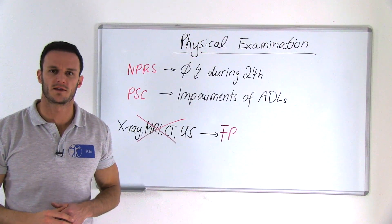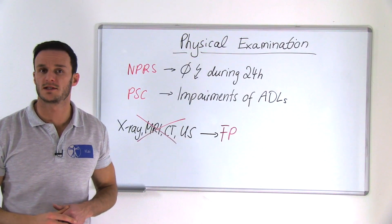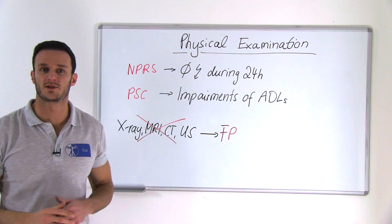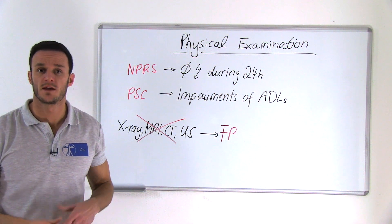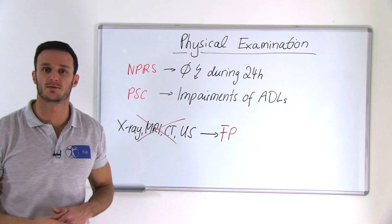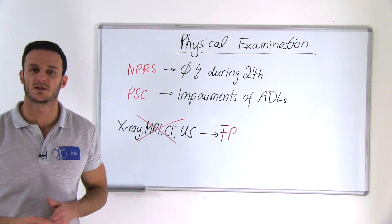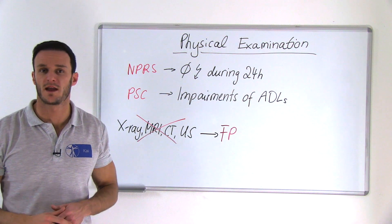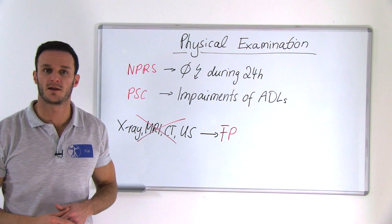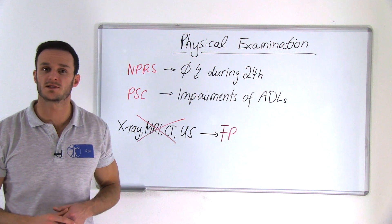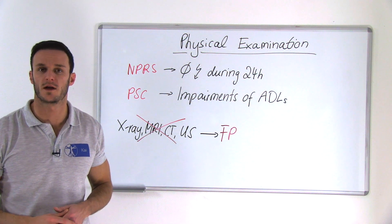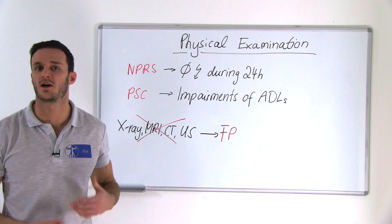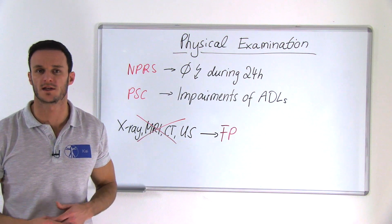The only clinometric tools that the guideline recommends are the numeric pain rating scale, to evaluate the average pain your patient suffers from during the course of 24 hours, as well as the PSC scale to assess impairments in daily living. This should be done at the beginning and end of treatment. It has to be noted that we are only talking about a clinically relevant improvement or deterioration with a difference of at least two points on these scales.